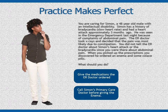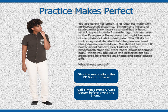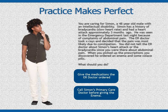You are caring for Simon, a 48-year-old male with an intellectual disability. Simon has a history of bradycardia (slow heart rate) and had had a heart attack approximately three months ago. He was seen in the emergency department last night because of complaints of abdominal pain. The ER doctor took x-rays and decided the pain was most likely due to constipation. You did not tell the ER doctor about Simon's heart attack or the bradycardia. When you pick up the prescriptions, you discover he ordered an enema and some Colace pills. What should you do?